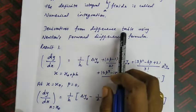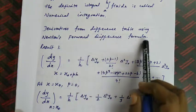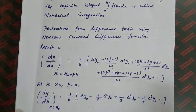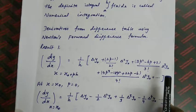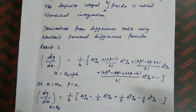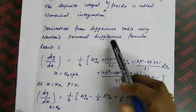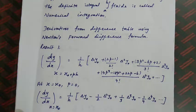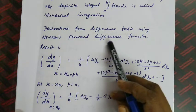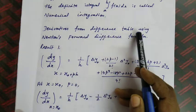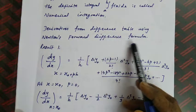Derivatives from the difference table are found using Newton's forward difference formula. Under Unit 2, we discussed Newton's forward and backward difference formulas. The forward difference is used when finding the y value near the beginning of the table, while the backward difference is used when finding the y value at the end of the table. The same approach applies here for numerical differentiation.